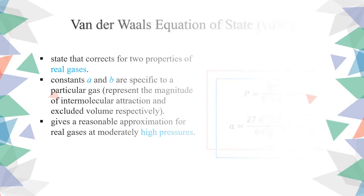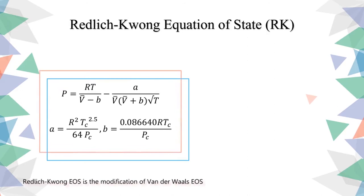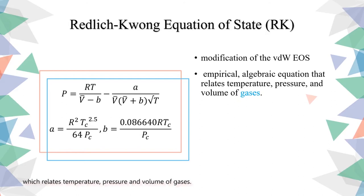Redlich-Kwong equation of state is a modification of van der Waals' equation of state which relates temperature, pressure, and volume of gases.